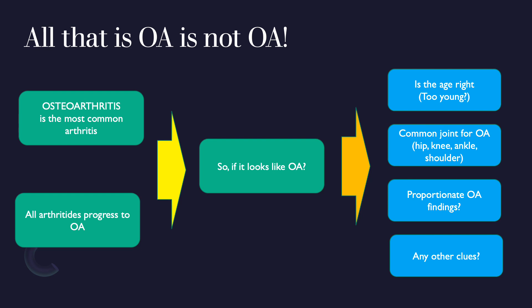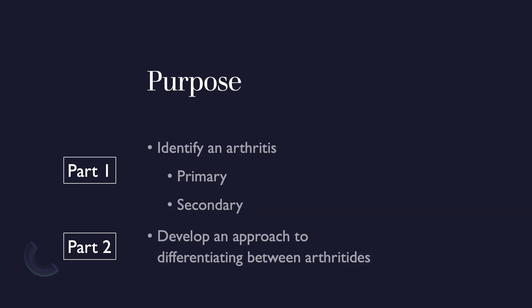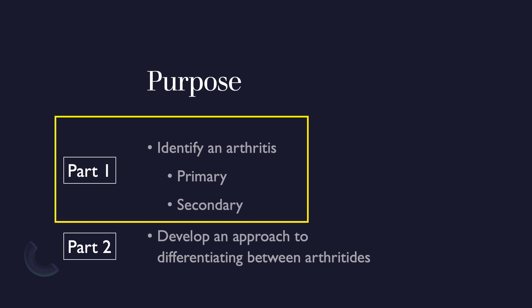To summarize: osteoarthritis is the most common form of arthritis, but remember that every arthritis — infectious, inflammatory, or any other cause — will ultimately lead to OA-like changes. When you see OA, ask yourself: Is this the right age? Is this the right joint? Are the OA findings proportionate in terms of joint space narrowing, subchondral sclerosis, and marginal osteophyte formation? And are there any other clues? In the next talk, we'll discuss an approach to differentiating between the different types of inflammatory arthritis. Thank you.